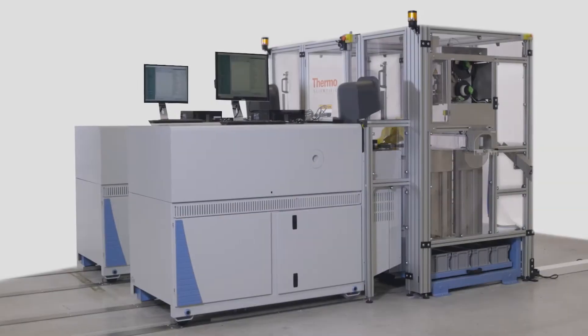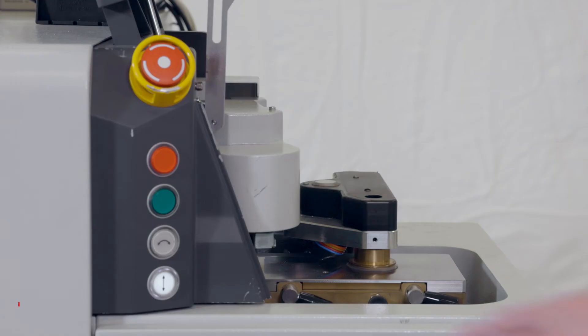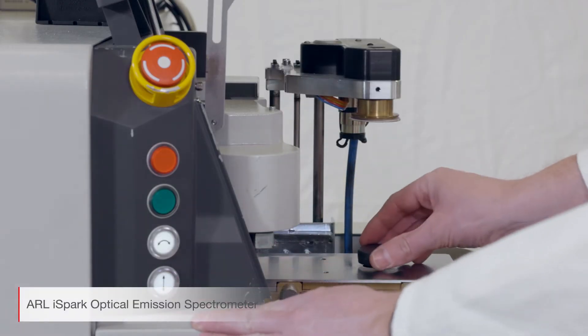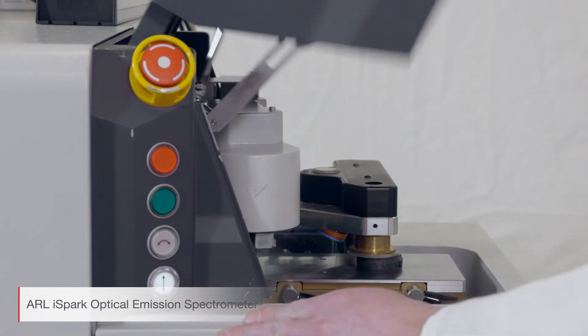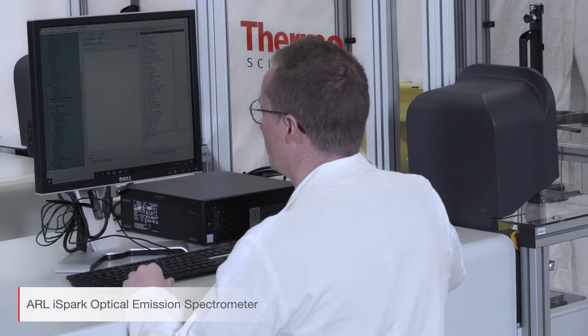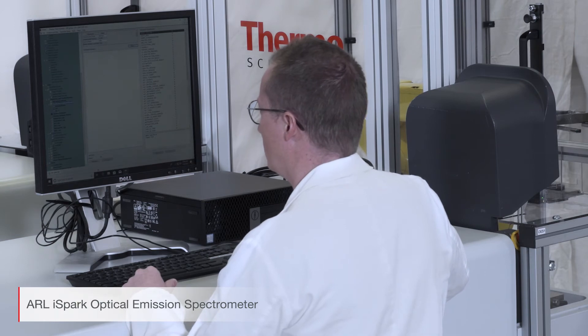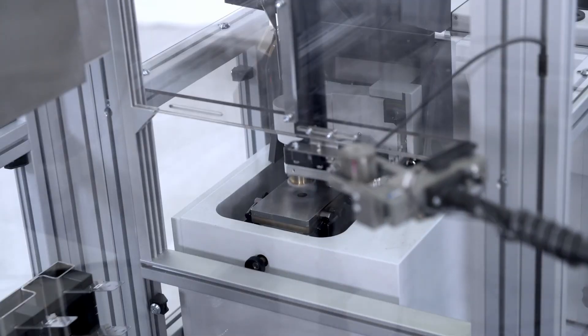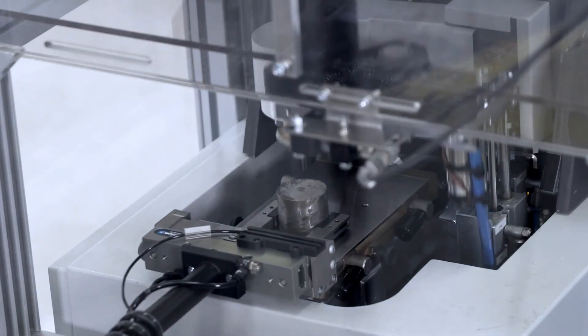At the heart of the system is the ARL iSpark optical emission spectrometer along with the OCSAS analytical software running on a dedicated PC. The SMS robot loads the prepared sample directly onto the spectrometer stand where it is automatically clamped during measurement.